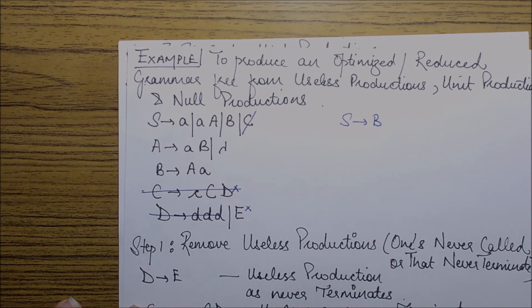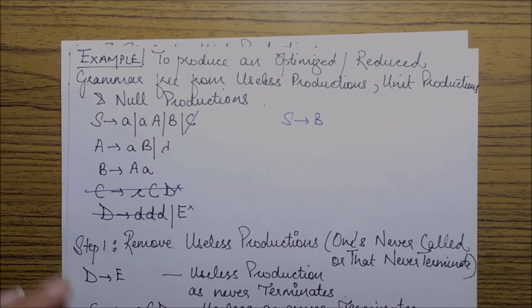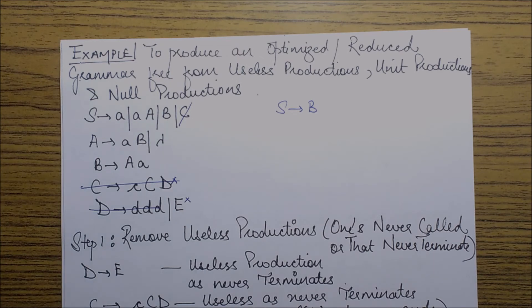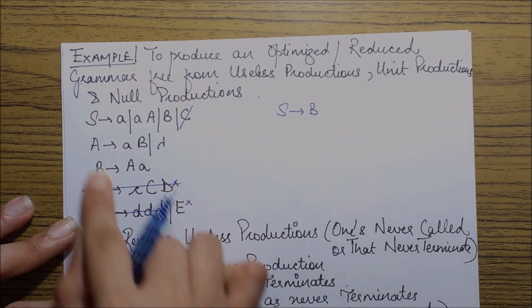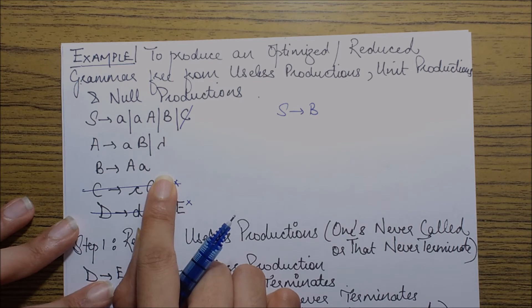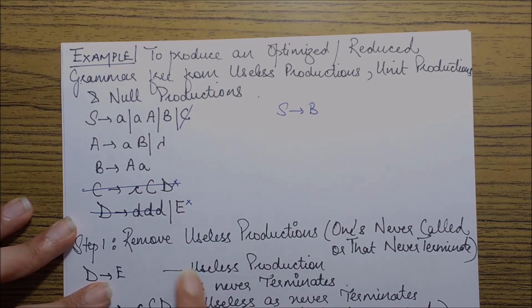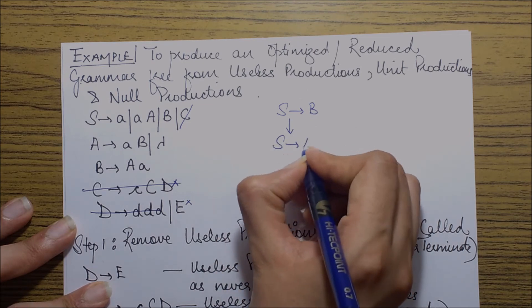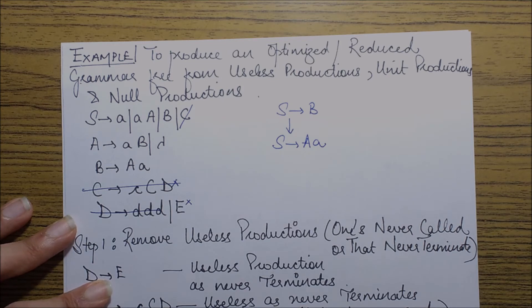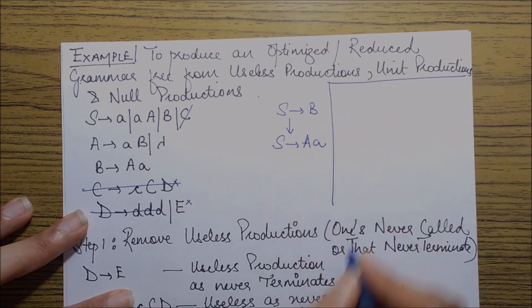So if you could remember, the procedure was to substitute the productions over here which were reachable from B, or I could say since this was a unit production, I would find out the production with the help of which if I replace this, the grammar won't change. So if I see my set of productions, B goes to A is the only production present over here. So I would replace my this production with S goes to A small a.